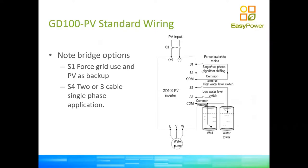The GD100 comes with digital inputs — four auxiliary contacts: S2, S3, and S4. These can be used to control the inverter against water sensors. You can have a dry-run sensor, which comes with virtually all borehole pumps so the pump doesn't run dry, and a sensor that stops the pump inverter when the tank is full to prevent overflow. When the tank drains overnight, the float will drop and the inverter will start automatically in the morning as soon as there is solar power available.